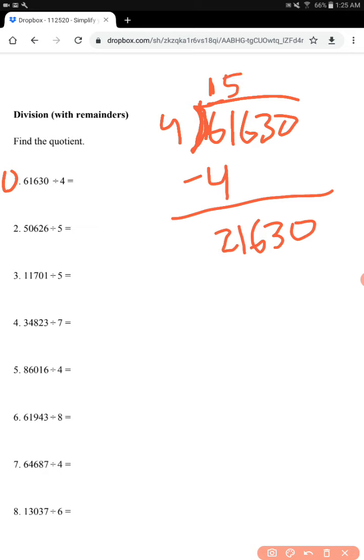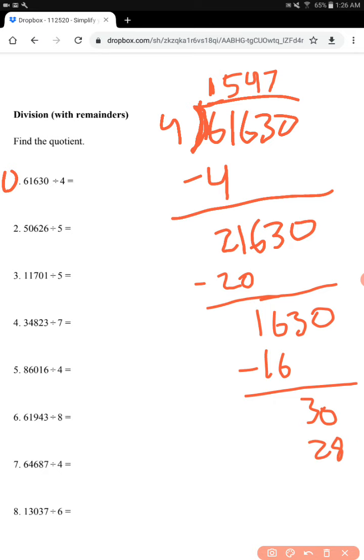Then 4 can go into 21, 5 times, since 5 times 4 equals 20. Then you subtract again, and you're left with 1630, and 4 can go into 16 exactly 4 times, since 4 times 4 equals 16, then you're left with 30. And 4 can go into 37 times, since 4 times 7 is 28. And that equals 2, oh, excuse me, I made a mistake.